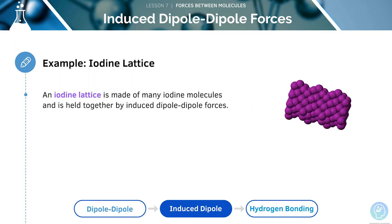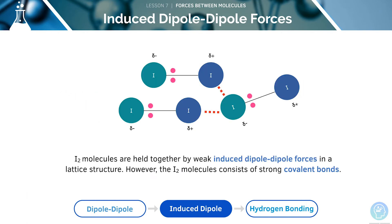The dipole is temporary as it is constantly being created and destroyed, but there is always a dipole present at any given time. For example, iodine molecules can form a lattice structure at room temperature. When iodine exists in a solid state, the molecules are held together by weak induced dipole-dipole forces in a lattice structure, even though the iodine molecule itself consists of a strong covalent bond.